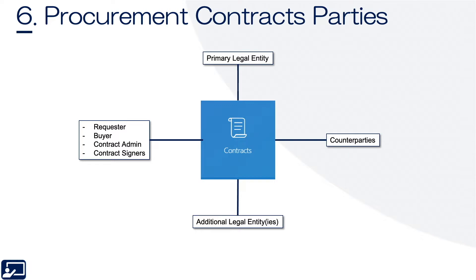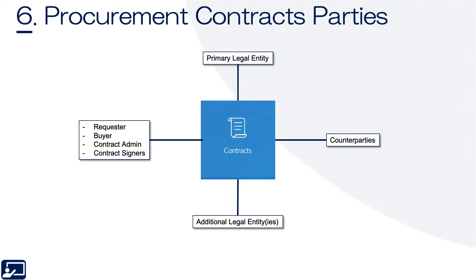Next: procurement contract parties — who's involved? There are four main types of contract parties: customer, primary legal, additional legal entities, and supplier.